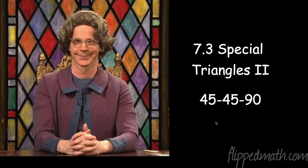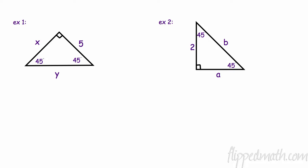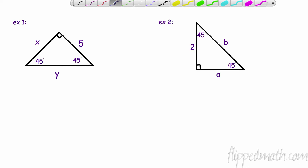We are back with 7.3 special triangles part two — these are the 45-45-90 triangles. There's an old Saturday Night Live character called the church lady who had a very famous saying we'll see in a few minutes. Let's take a look at these triangles; we want to try and solve them and find the other sides. A couple of things to address: 45-45-90 means this is an isosceles triangle.